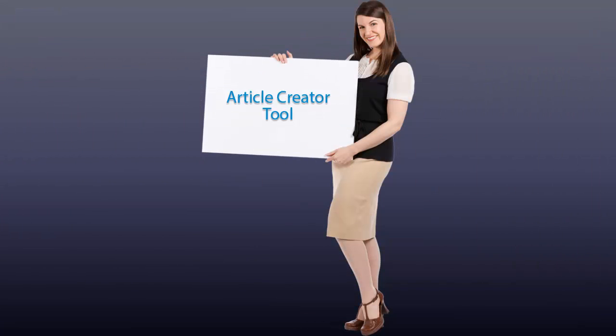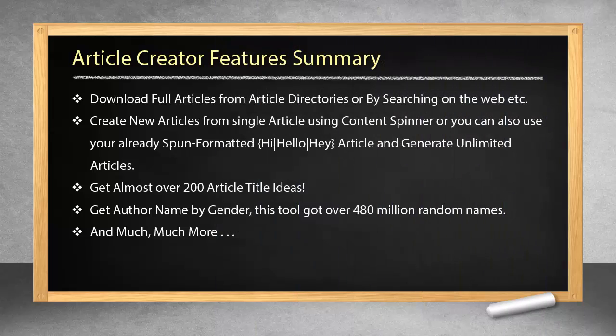Article creator tool feature summary. Download full articles from article directories or by searching on the web, etc. Create new articles from a single article using a Content Spinner, or you can also use your already spun formatted article and generate unlimited articles. Get almost over 200 article title ideas. Get author names by gender — this tool has over 480 million random names.